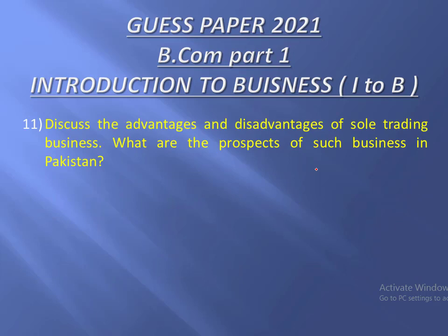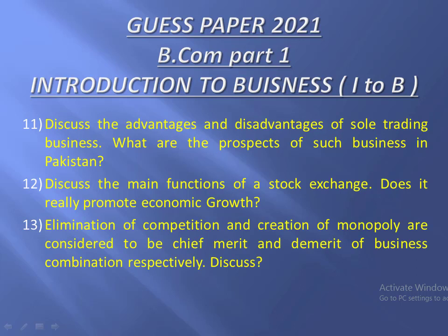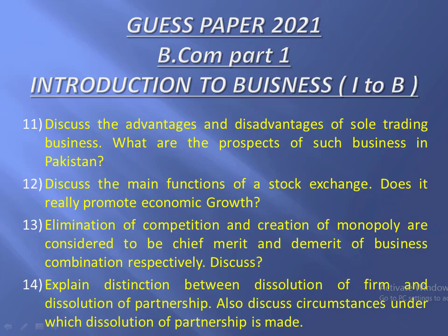इसके बाद question number eleven: Discuss the advantages and disadvantages of sole trading business, what are the prospects of such business in Pakistan. Question number twelve: Discuss the main functions of a stock exchange, does it really promote economic growth. Question number thirteen: Elimination of competition and creation of monopoly — consider to be chief merit and demerit of business combination respectively, discuss. Question number fourteen: Explain distinction between dissolution of firm and dissolution of partnership, also discuss circumstances under which dissolution of partnership is made.